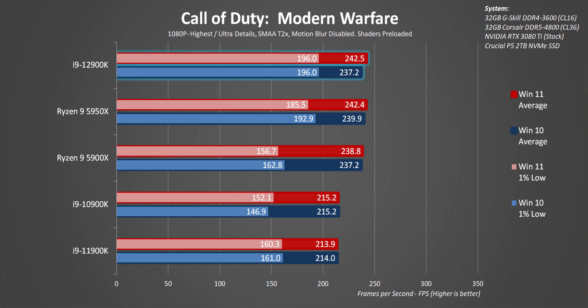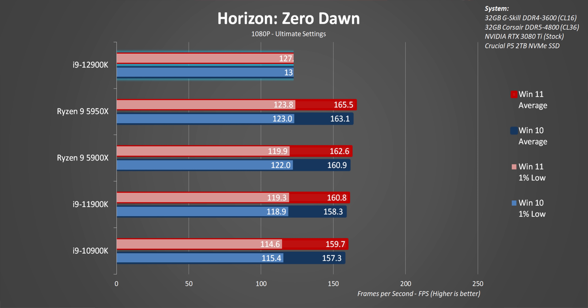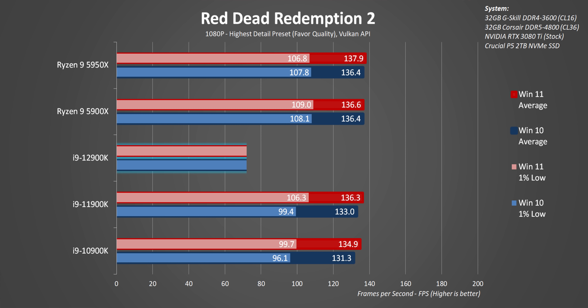The last couple of games show basically the same thing we've already seen, with a bit more GPU limitation. Intel comes out with solid performance numbers in both Windows versions. However, some games just won't really benefit that much from more CPU power — some titles need more graphics horsepower than others to make a noticeable difference, and yes, this applies even at 1080p. Here in Red Dead Redemption 2, the 12900K takes a hit in the 1% lows under Windows 11 — something that affected every CPU at some point in this review.